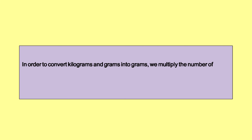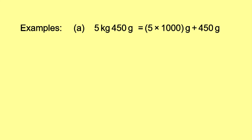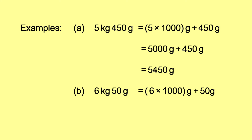In order to convert kilograms and grams into grams, we multiply the number of kilograms by 1000 and then add the number of grams to it. Example: 5 kilograms and 450 grams = 5 × 1000 + 450 = 5000 + 450 = 5450 grams. 6 kilograms and 50 grams = 6000 + 50 = 6050 grams.